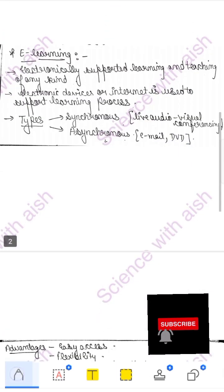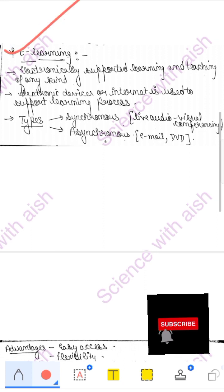Now comes e-learning. E-learning is electronic learning. When you are teaching or students learn by the use of internet or using an electronic device, we call it e-learning. Electronic supported learning and teaching of any kind. Whenever you use an electronic thing to learn, or you teach as a teacher, we call it e-learning, electronic learning.